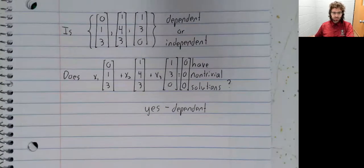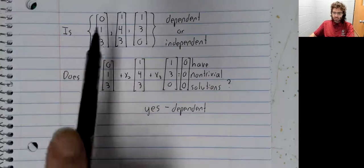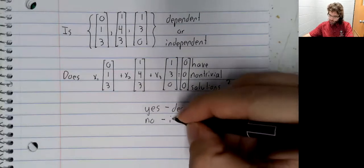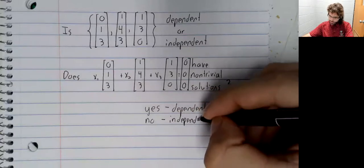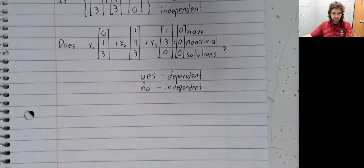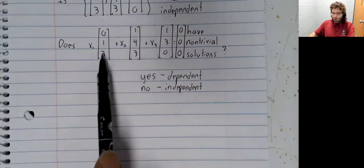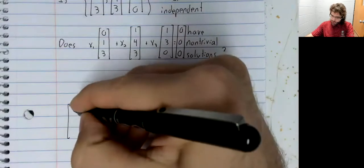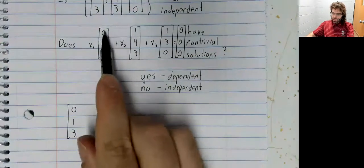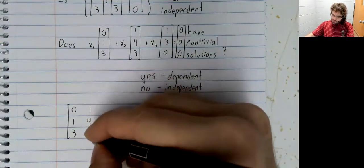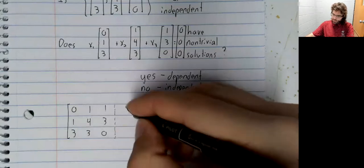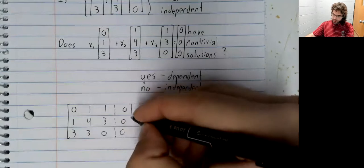If the answer is yes, then this set is dependent. If it's no, this set is independent. We can solve this vector equation — the fact that it's homogeneous doesn't change anything. We'll set up the augmented matrix with these vectors as its columns, and the zero vector on the right.